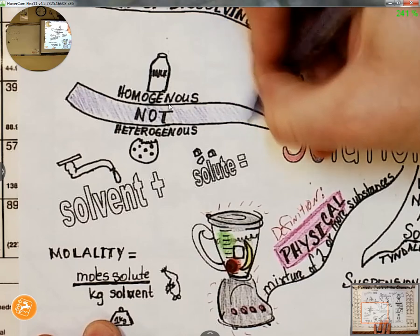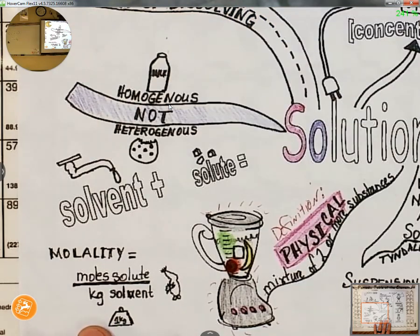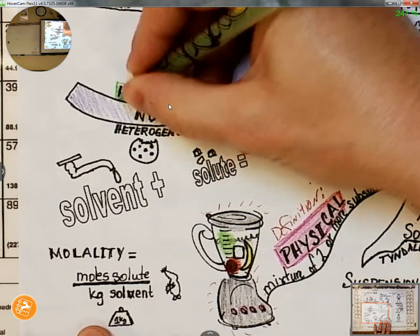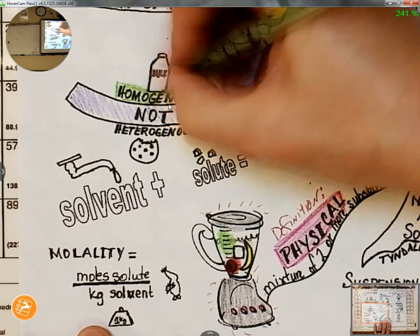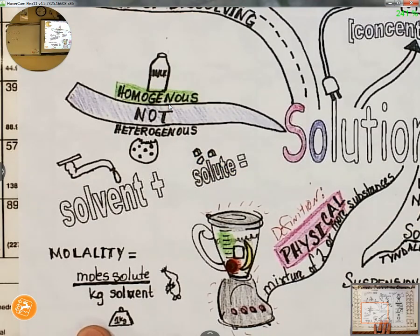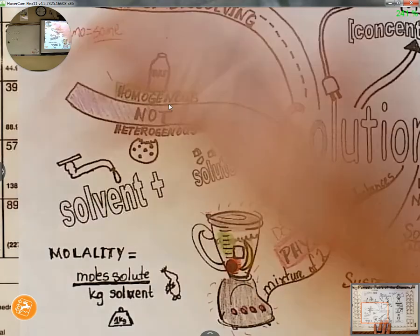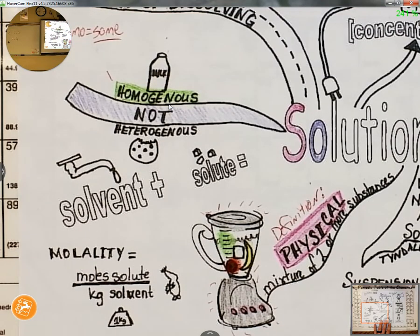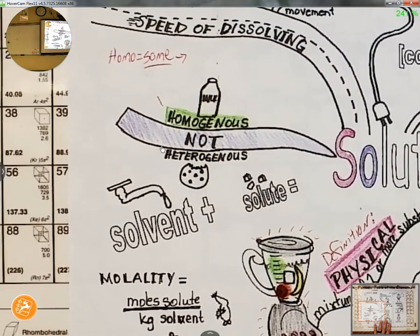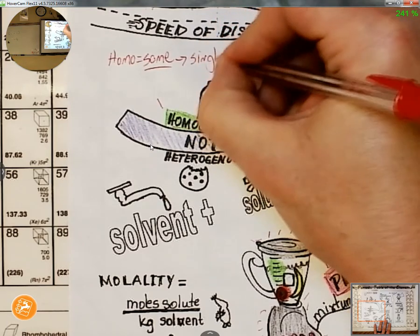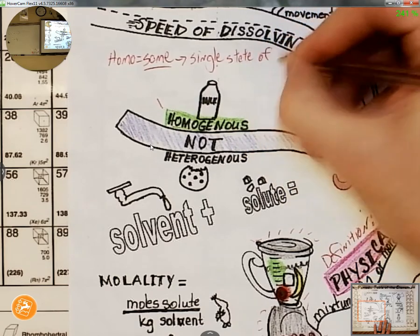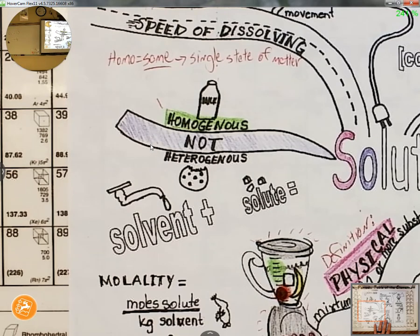The word homogeneous — the root 'homo' means same. When I have a homogeneous mixture, it is the same throughout. Specifically, what that means is it is all existing in a single state of matter, with no phase boundaries — it's not like liquid drops floating in liquid, like a lava lamp. There are no boundaries. It is all perfectly blended all the way through.